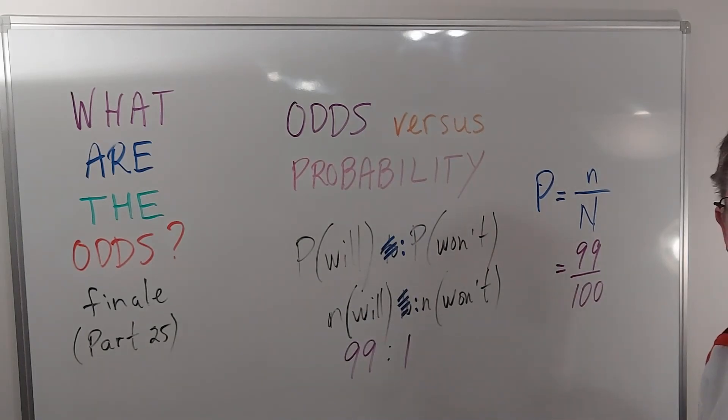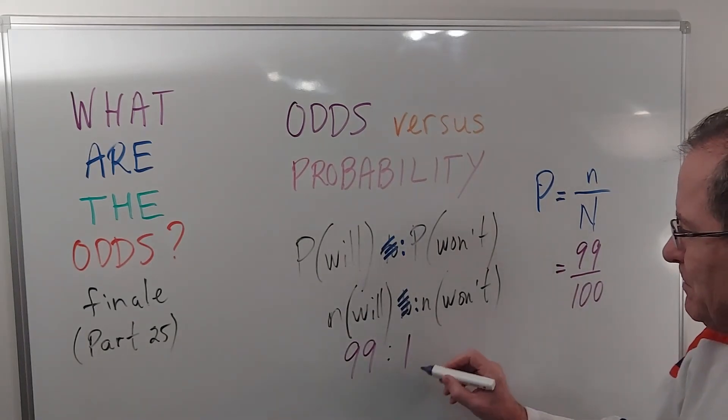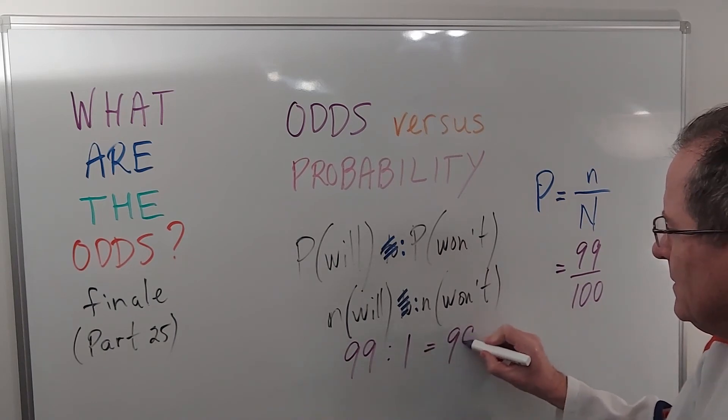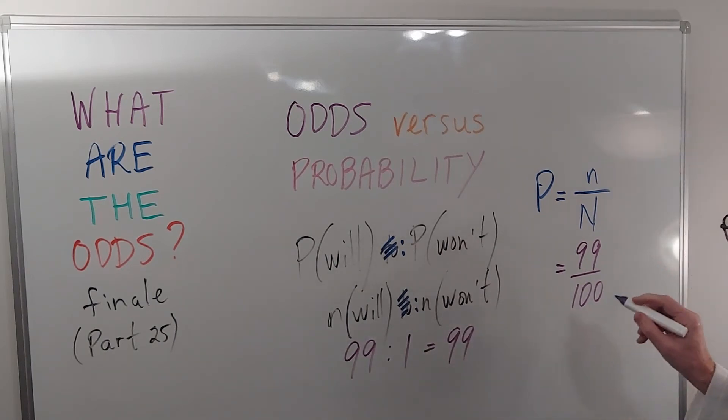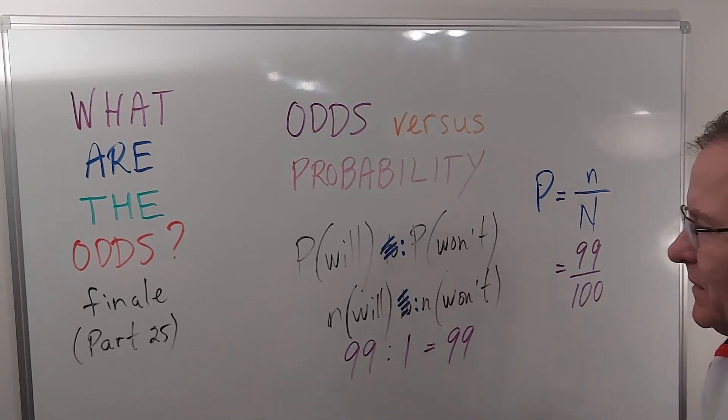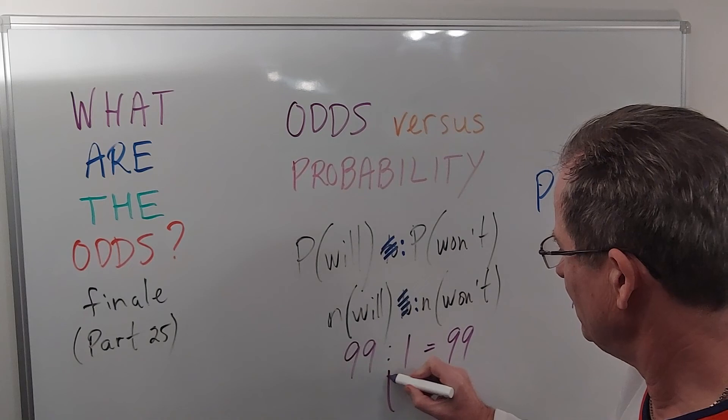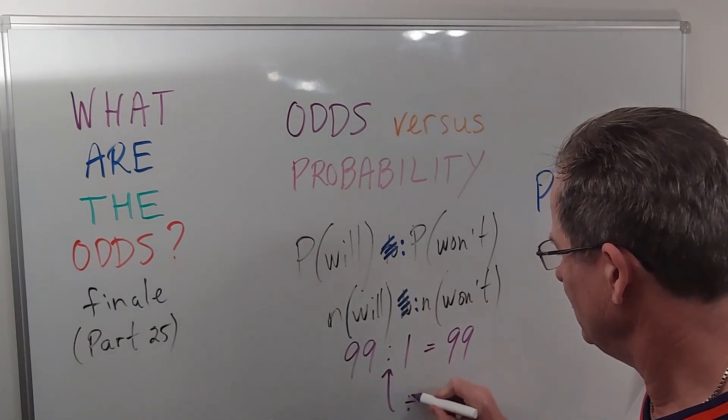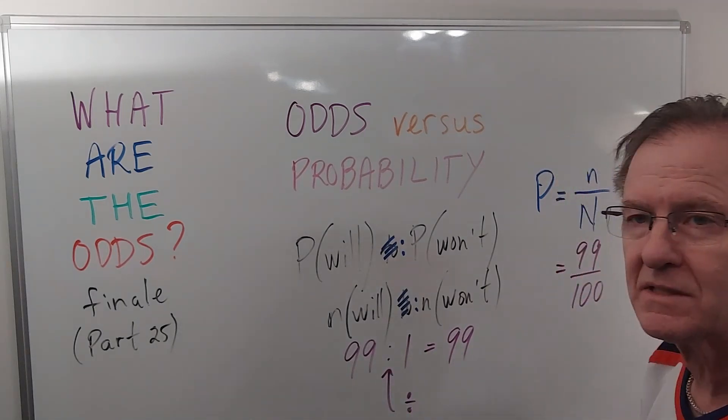So as you can see, they're not the same thing. This is basically equal to 99, which is the numerator over here, but they're quite different. You can think of this symbol as division, which is why you can say it's 99.